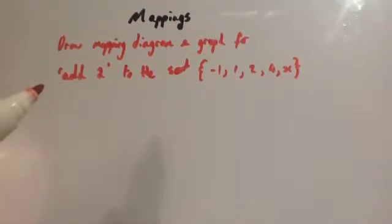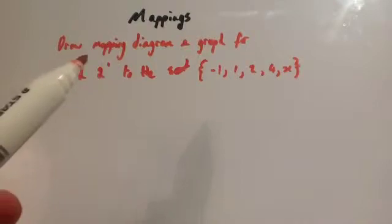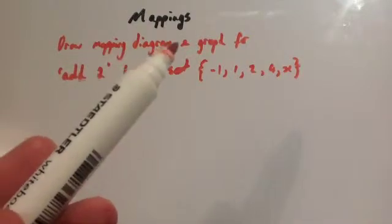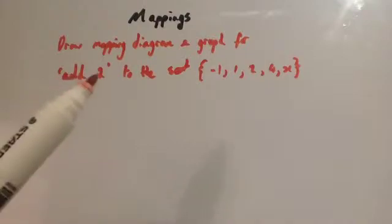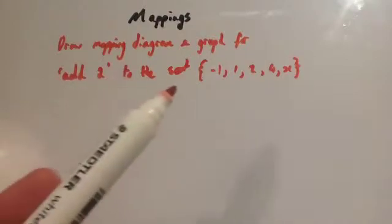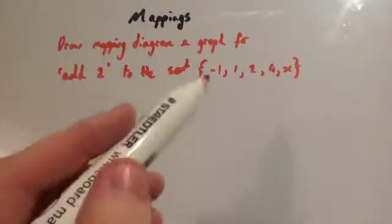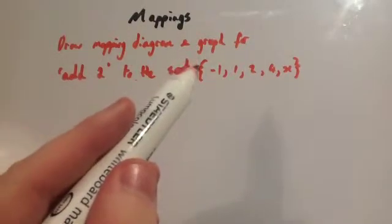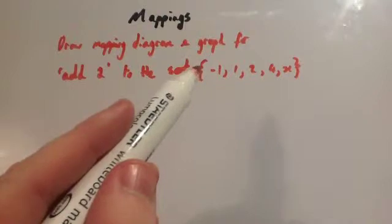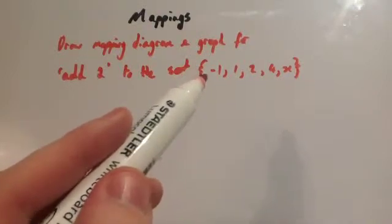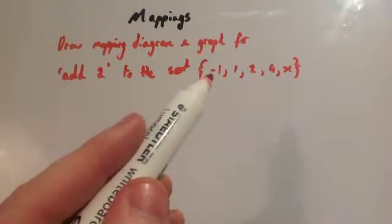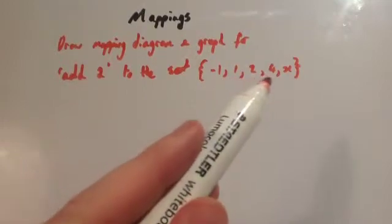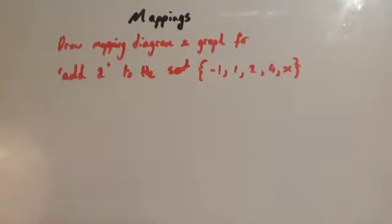So first of all, I've asked you to draw a mapping diagram and a graph for the rule 'add 2' applied to the set — notice the bracket here, it's like a bracket but it goes in and around — the set is: minus 1, 1, 2, 4, and x.